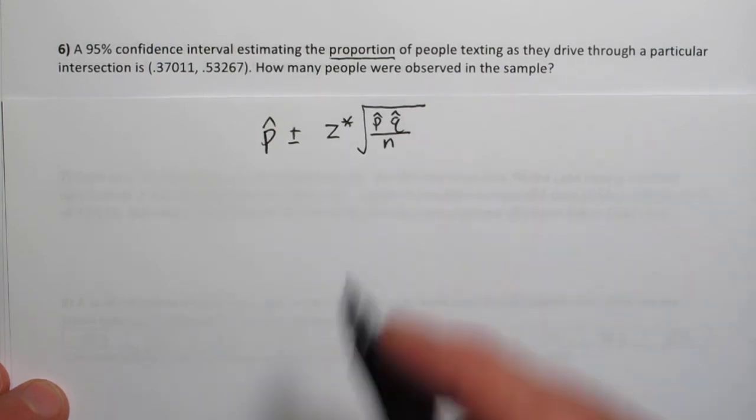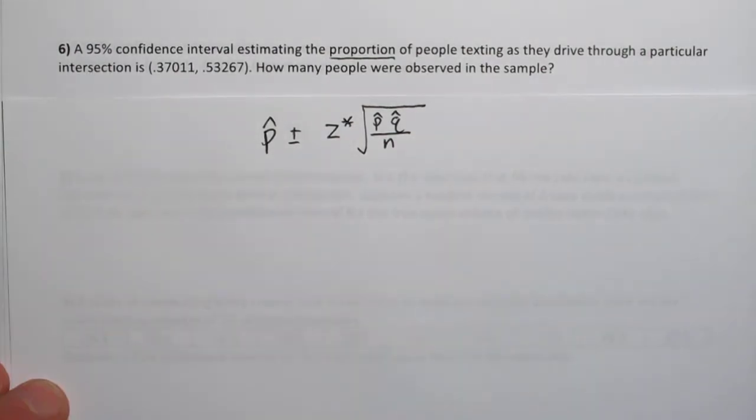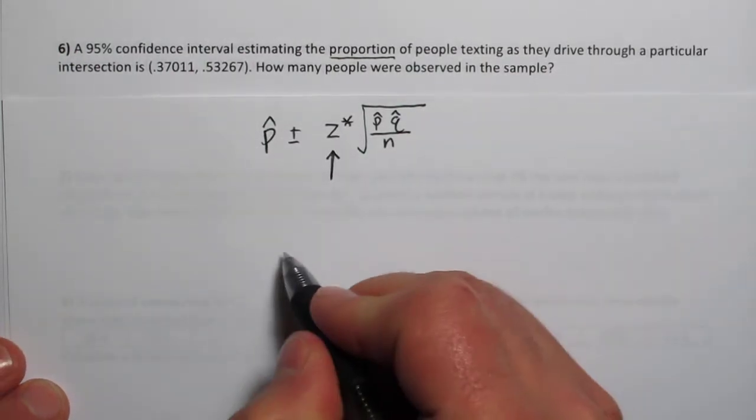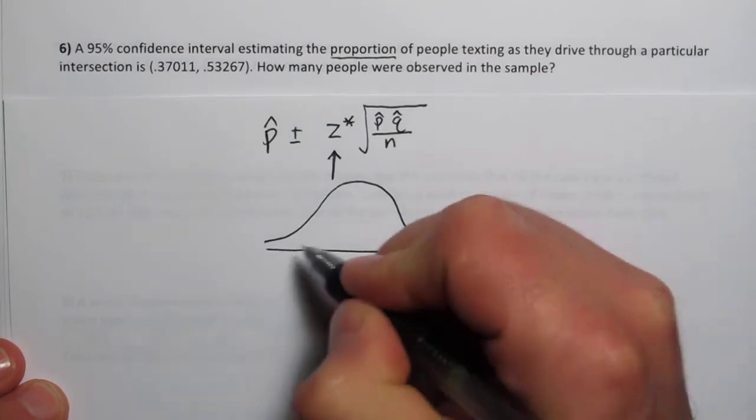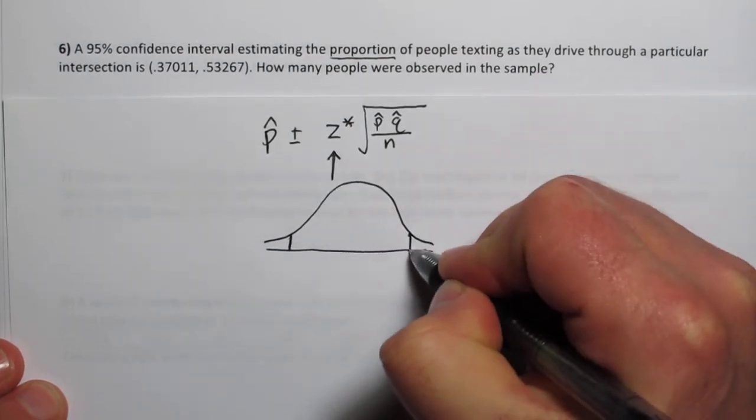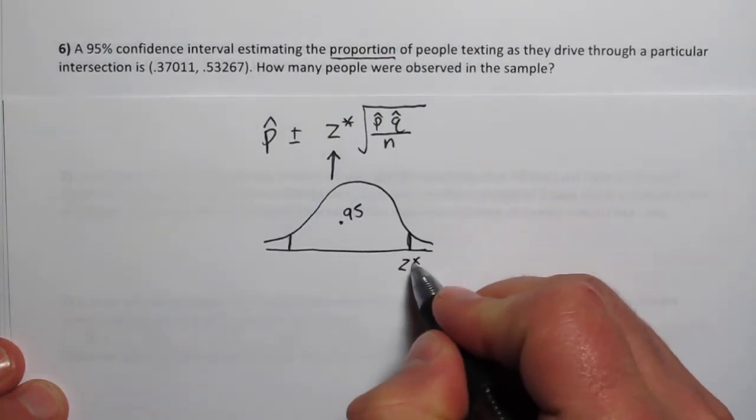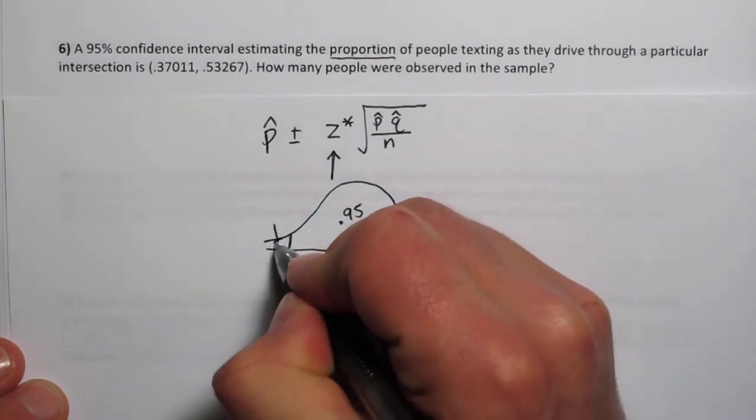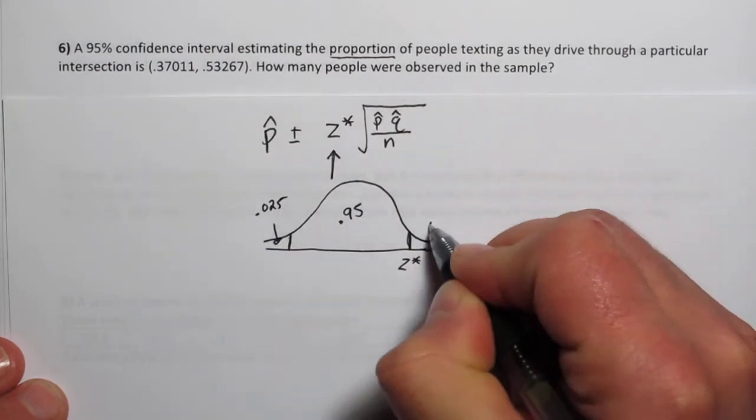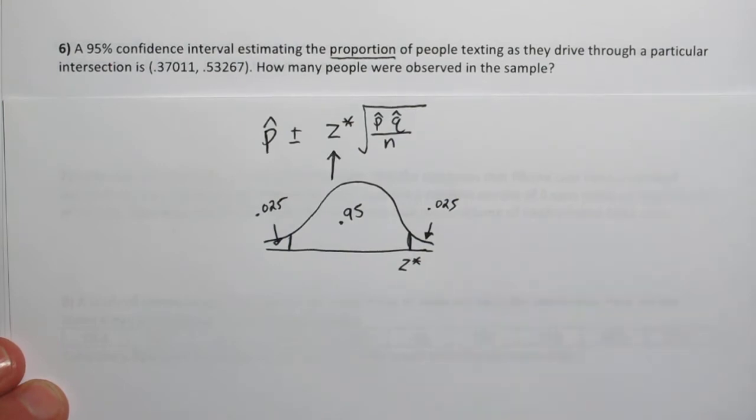So let's start figuring out the other pieces of the puzzle. We can start with z-star. Z-star is the critical value and it's based on this 95% confidence. So z-star can be found using inverse norm. So if we want to find the middle 95% of the normal distribution, what would our cutoff values be right here? That's what z-star is going to be. It's going to be actually this value right here because it will be our positive cutoff value. Now if this is 95%, then there must be 2.5% right here and also 2.5% right here.